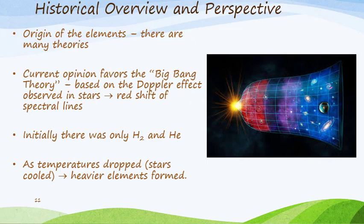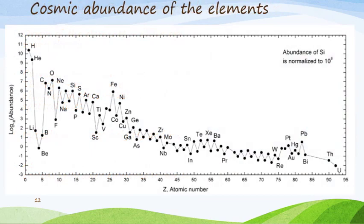There are many theories about the origin of the elements. Current scientific opinion favors the Big Bang Theory, which is based on the Doppler effect observed in stars, where we get a red shift of spectral lines. There was supposedly some kind of Big Bang, and now we have an expanding universe with stars, planets, and galaxies. Initially there was only hydrogen and helium, and as temperatures dropped and stars cooled, this led to the formation of heavier elements. Hydrogen and helium are the most abundant elements in the universe, as shown in the chart of cosmic abundance of elements.